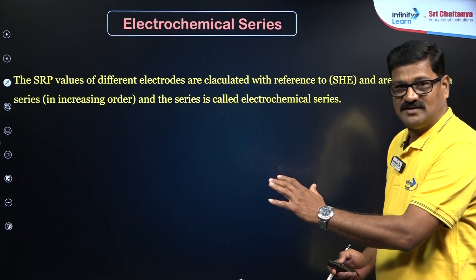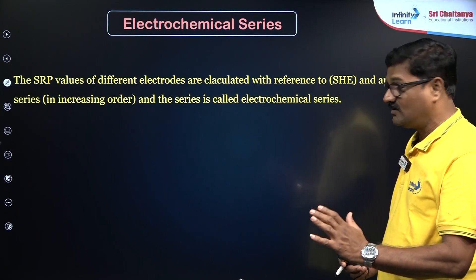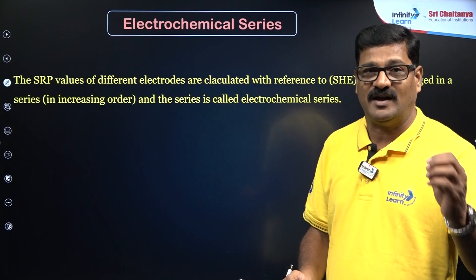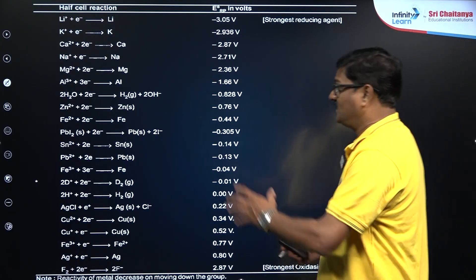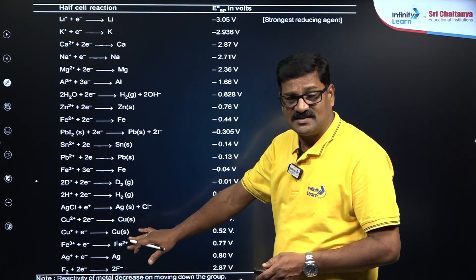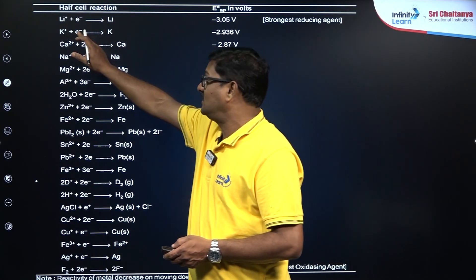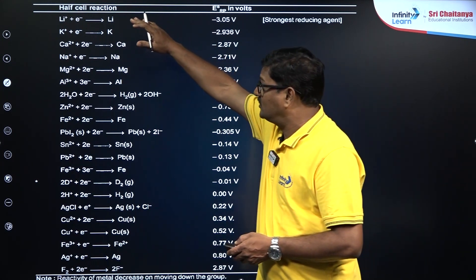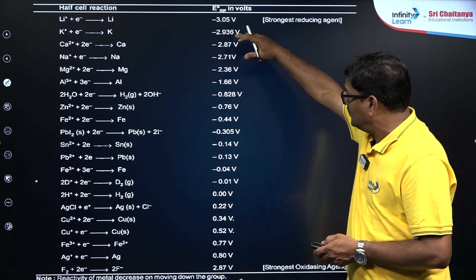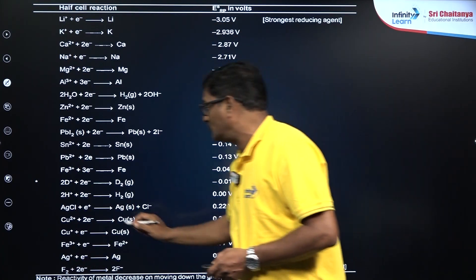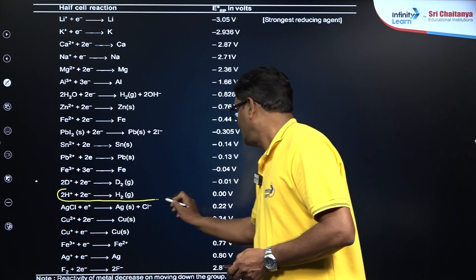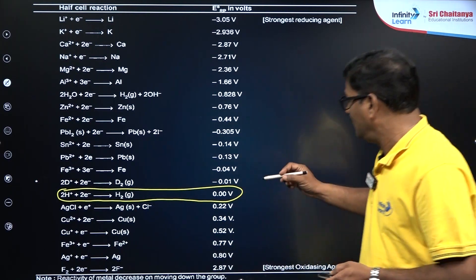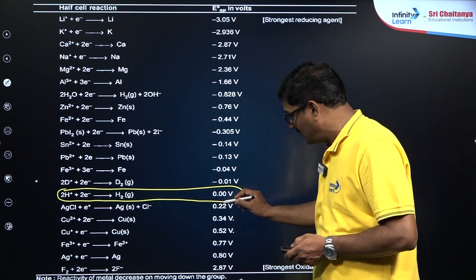If you look at this Electrochemical Series, it is in increasing or decreasing order. The reduction potential values are taken from the NCERT textbook, so you have to consider SRP values. Lithium takes an electron to give lithium, and its value is minus 3.5. The values are arranged in increasing order with reference to hydrogen. Hydrogen's value is taken as 0.00 volts; values above are negative and below are positive.